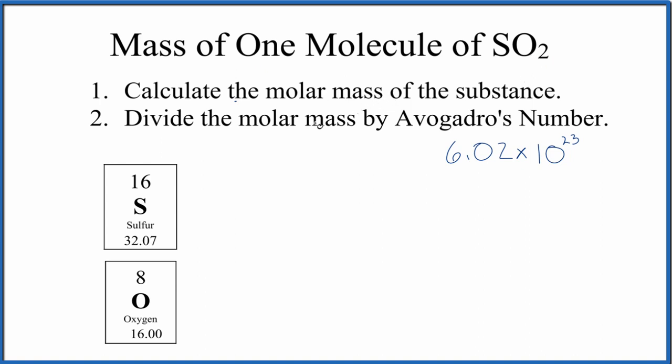To do that, all we really need to do is find the molar mass for SO2, and then divide that by Avogadro's number. That'll give us the mass of one molecule of SO2. So let's do that.